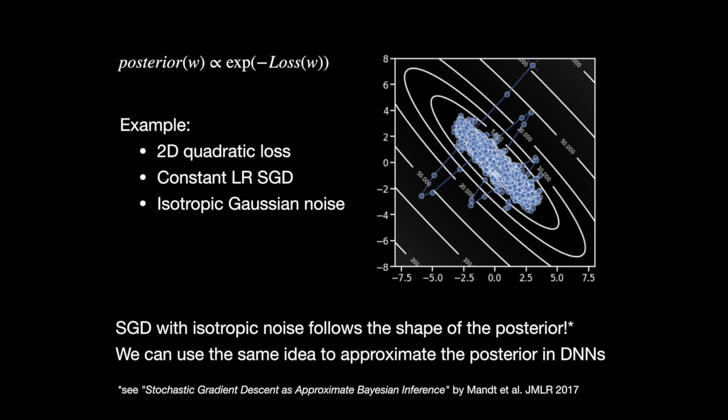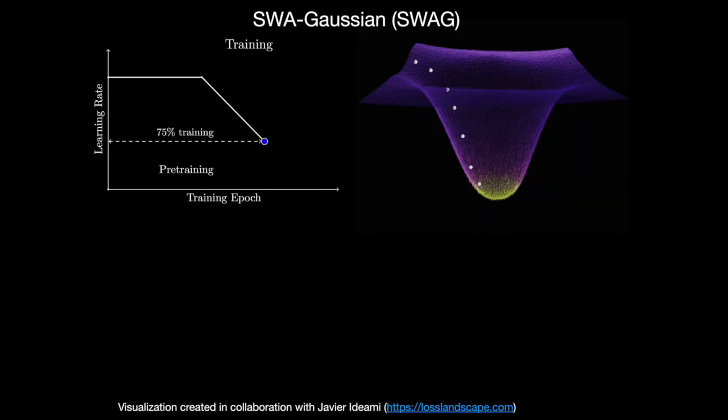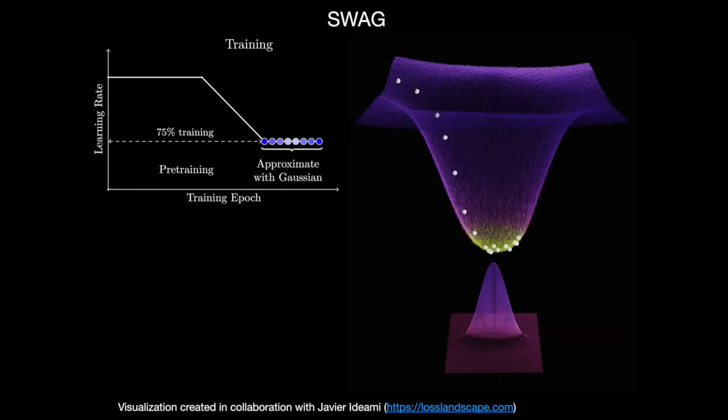We can use this same idea to approximate the posterior in deep neural nets. In this work, we propose SWA-Gaussian, or SWAG, a scalable approximate Bayesian inference technique for deep learning. We start by pre-training a neural network with SGD to get a good initial solution. Starting from this solution, we run SGD with a high constant learning rate and keep track of the iterates. We construct a Gaussian approximation to the trajectory, whose mean is the average of SGD iterates — known as the stochastic weight averaging, or SWA, solution.